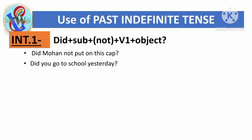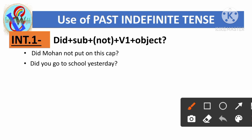'Did you go to school yesterday?' Here 'did' is used first, then the subject 'you', then the first form of the main verb 'go', and 'school' is the place.